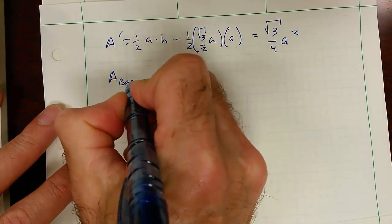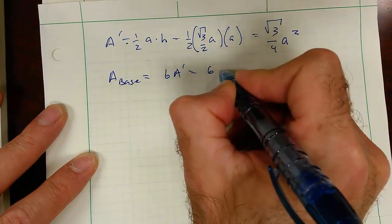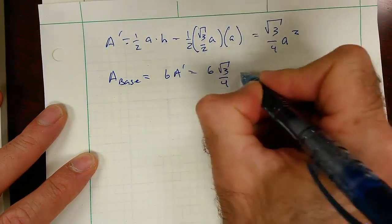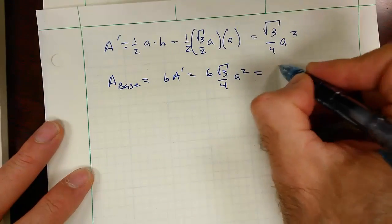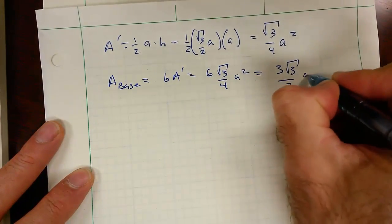The area of the base is 6 times A prime. So that's 6 times the square root of 3 over 4 a squared, or 3 root 3 over 2 a squared.